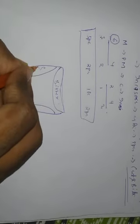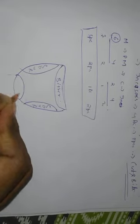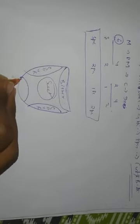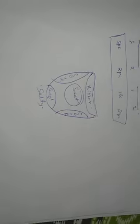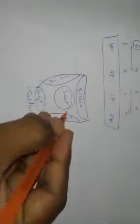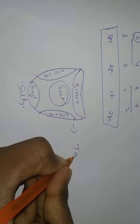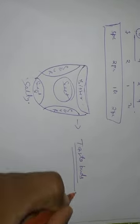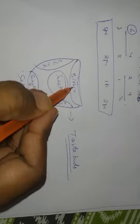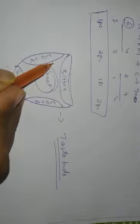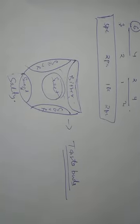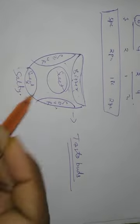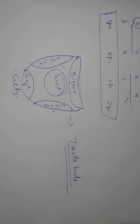In the tongue structure, at the back more bitter taste is felt. On the sides there is sour taste. In the central part there is sweet, and at the front sweet and salty. The tongue has taste buds due to which we are able to taste. There are mainly 4 tastes: bitter is felt at the back, sour on the sides, sweet in the middle, and sweet and salty at the front.